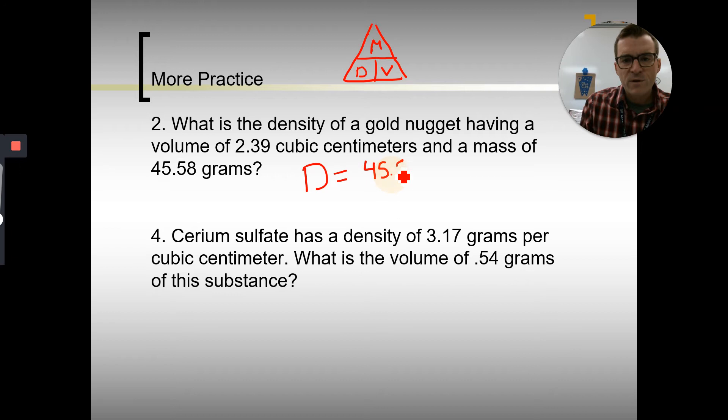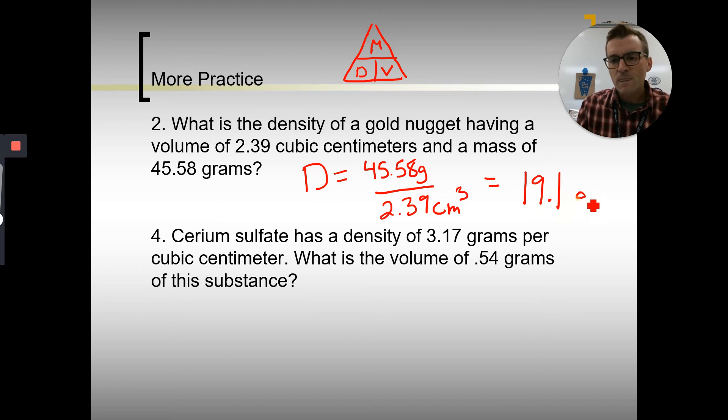So it tells us 45.58 grams is our mass over 2.39 cubic centimeters—cm cubed, that is our volume. So 45.58 divided by 2.39. And with significant figures, 19.1. And then units, grams per cubic centimeter.